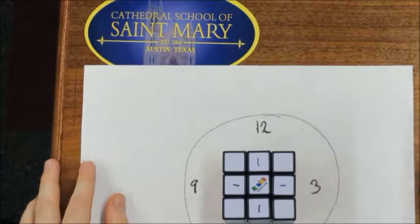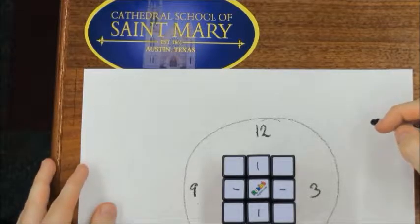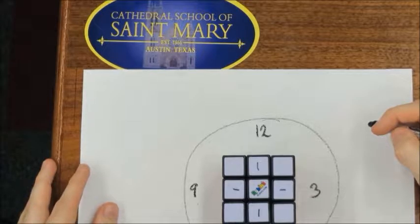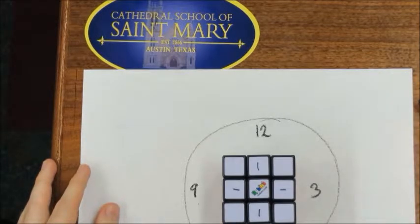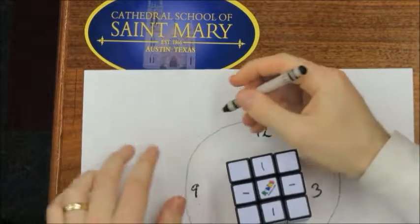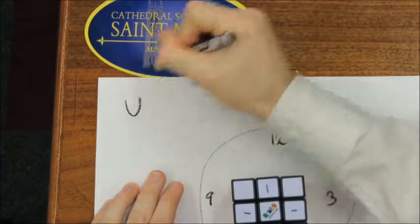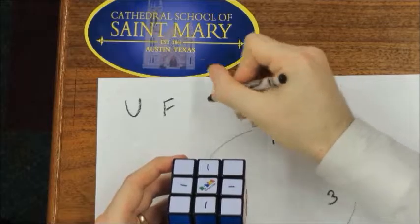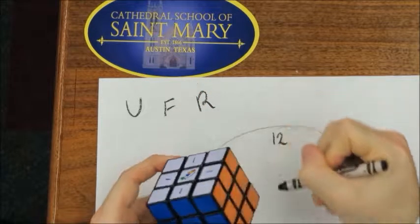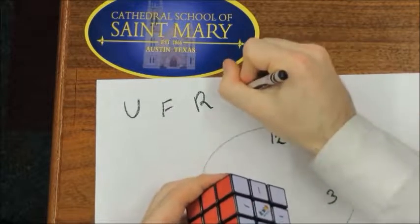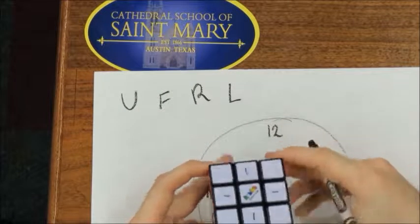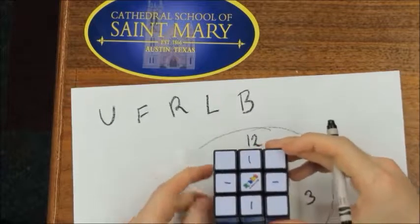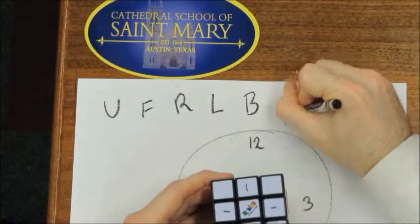In these videos I will be showing you letters. Letters indicate what side I'm talking about and whether you should move it clockwise or counterclockwise. The letters are: U for the up side, F for the front side, R for the right side, L for the left side, B for the back side, and D for the down side.